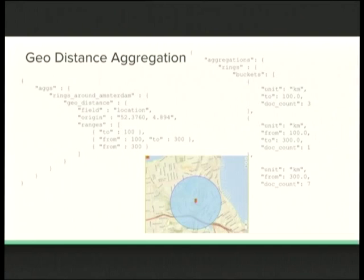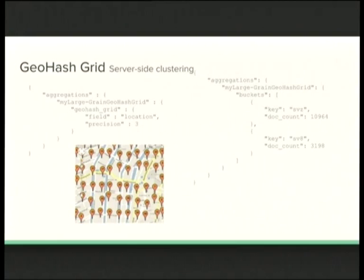More interesting — and much harder to do with SQL — is the geodistance aggregation. I want to know all restaurants within one kilometer, five kilometers, and 100 kilometers from me. It's the same kind of aggregation as the date histogram but based on locations, and it's out of the box with Elasticsearch. You can also use the geo hash aggregation, which does clustering of points similar to what Google Maps does — grouping multiple points together and showing a count. This uses the geo hash standard for clustering on low-precision geo data.